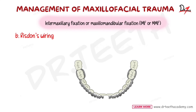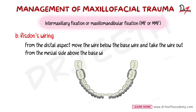For each tooth: from the distal aspect, take the wire out below the base wire; on the mesial side, take the wire out above the base wire, and then twist them together. After twisting, tuck the wire into the interdental space.